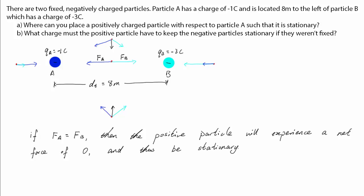We know that B has a bigger negative charge than A, which means that it will pull the positive particle more strongly. However, we also know that distance affects attraction. So if we place the positive particle closer to A and further away from B, then this can compensate for the fact that B has a larger charge than A. So we expect the positive particle to be closer to particle A than particle B in our answer.